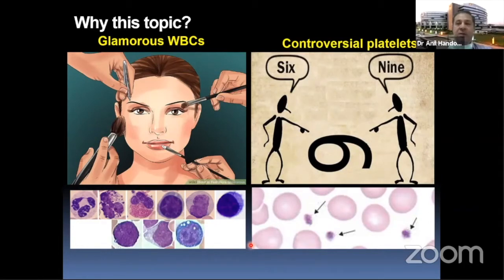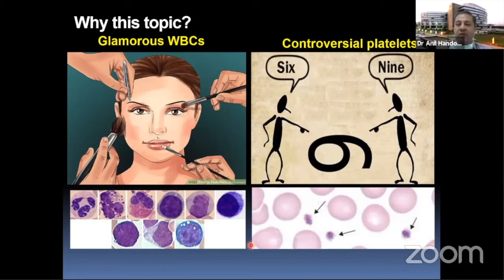The maximum glamour in hematology goes to WBCs — and rightly so, because leukemias are not only financially significant but also large cells easy to identify. We also have platelets, which are forever controversial, especially in the context of dengue. In this big tussle between the glamorous WBCs and the controversial platelets, the RBC becomes a poor cousin of both.